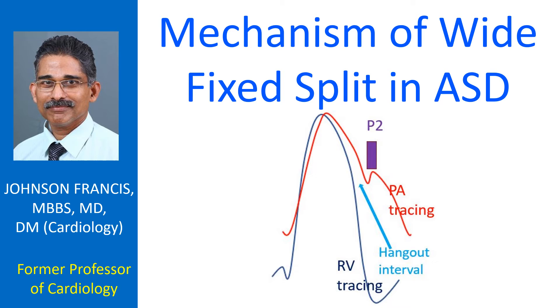This is the mechanism of wide fixed split in ASD. The split is wide in ASD because right ventricular emptying is more prolonged due to the volume overload.